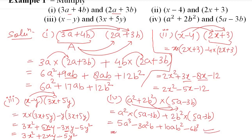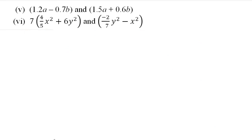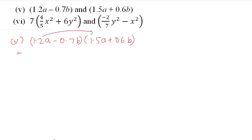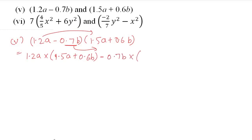For the fifth part: multiply (1.2a - 0.7b)(1.5a + 0.6b). We distribute: 1.2a multiplied by (1.5a + 0.6b), and -0.7b multiplied by (1.5a + 0.6b).